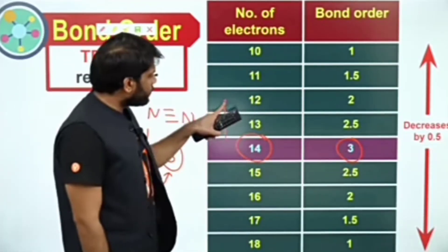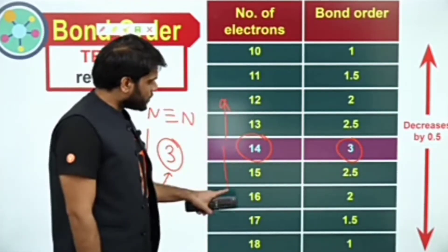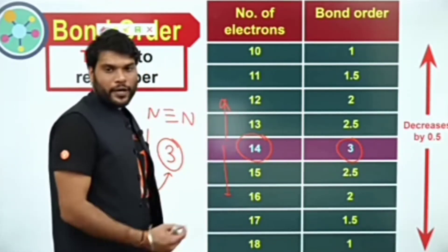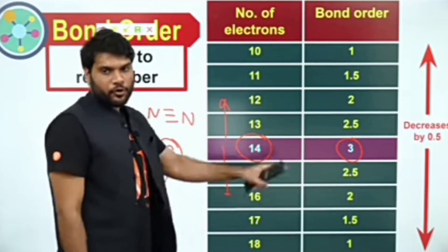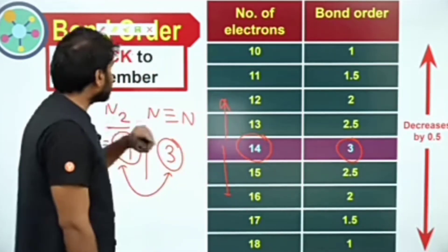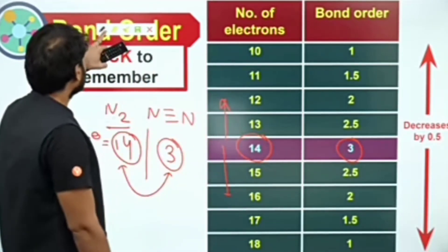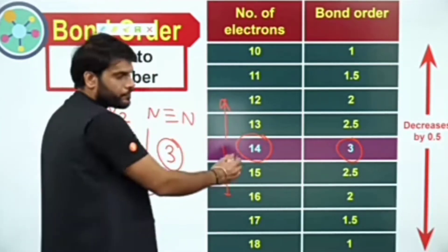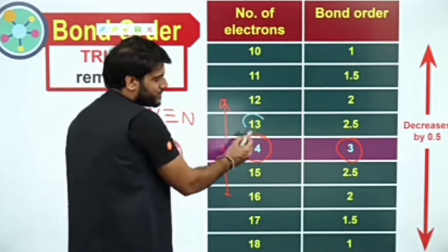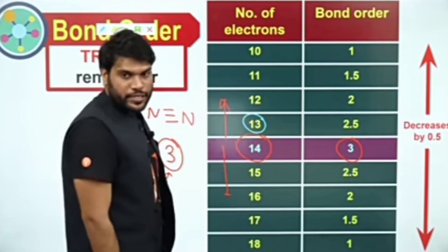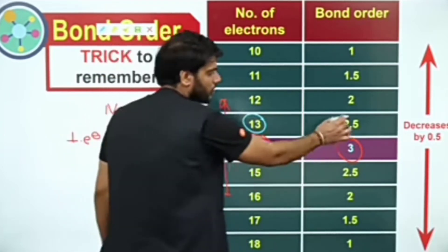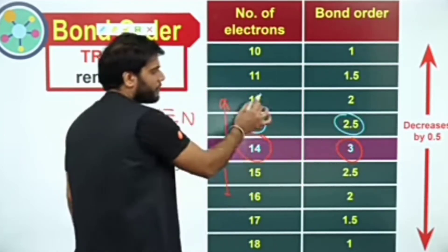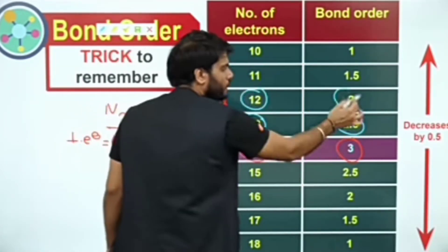Now what do you want? You want to go up or go down. You have to find the bond order — it's a simple trick to remember this. In 14, if someone has 13 electrons, how much of bond order will be? 2.5. And 12 electrons gives bond order 2.